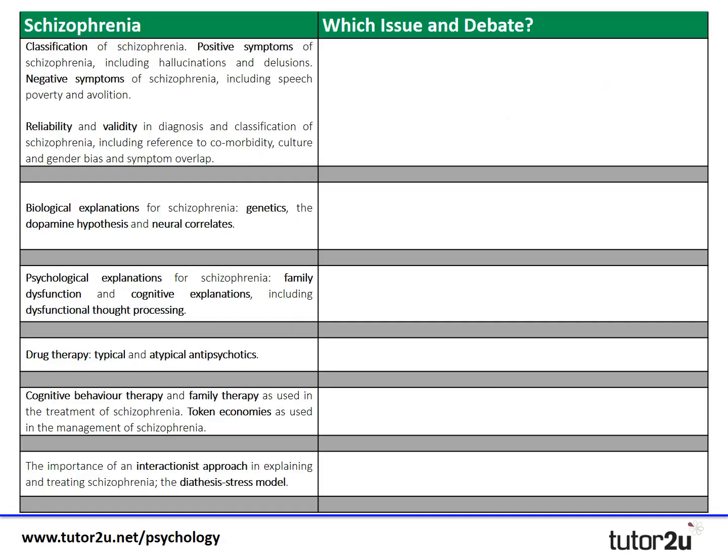The schizophrenia part of the course is divided into six different subsections: the classification and diagnosis of schizophrenia including reliability and validity, then biological explanations, then psychological explanations, then drug therapies which are your biological treatments, CBT and family therapy and token economies which are your psychological treatments, and then the interactionist approach.